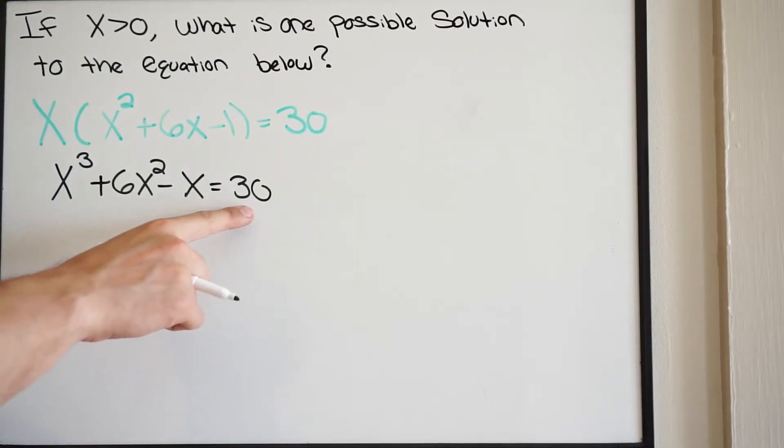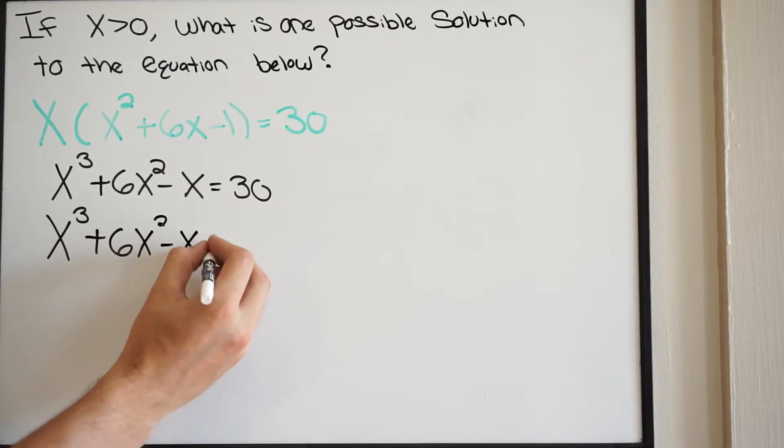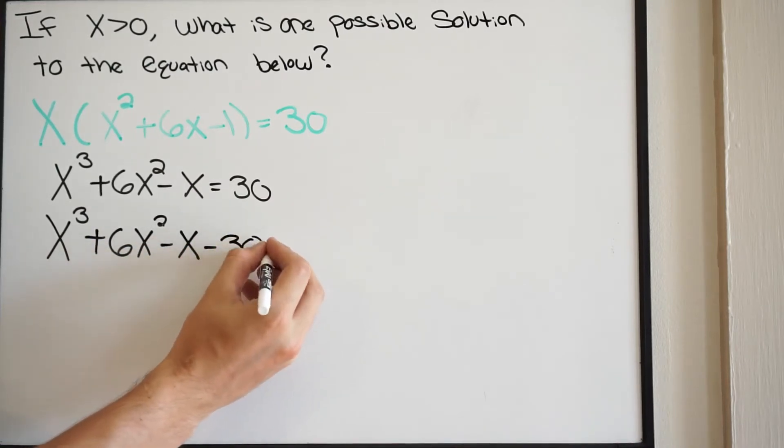In order to do that, I need to move this 30 over to the left side by subtracting 30. So now I have x cubed plus 6x squared minus x minus 30. This is all equal to 0.